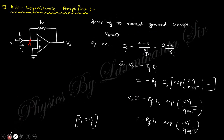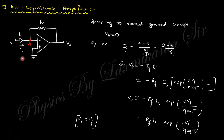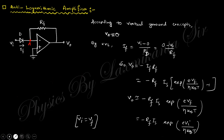For the anti-logarithmic amplifier, the diode and resistor are simply interchanged. The current through the diode equals Is × exp(Vi/kT), and the output Vo = −Rf × Is × exp(Vi/kT). Thus the output voltage is the exponential (anti-logarithm) of the input voltage — that's why it's called the anti-logarithmic amplifier.